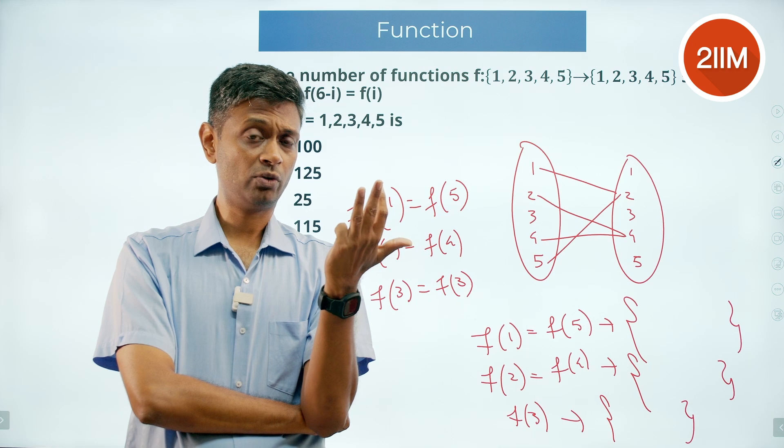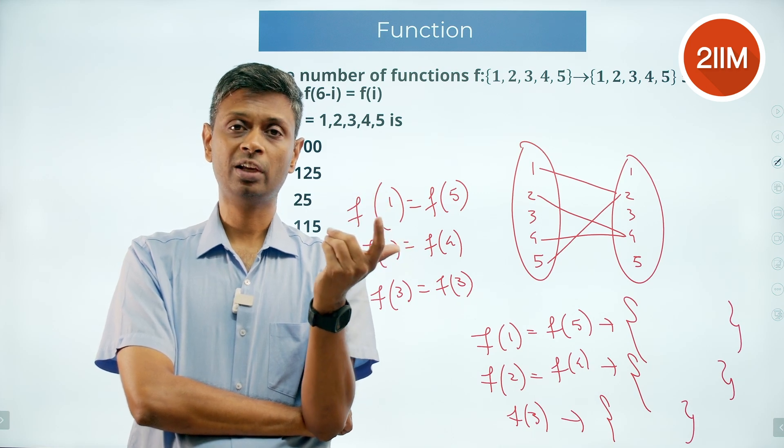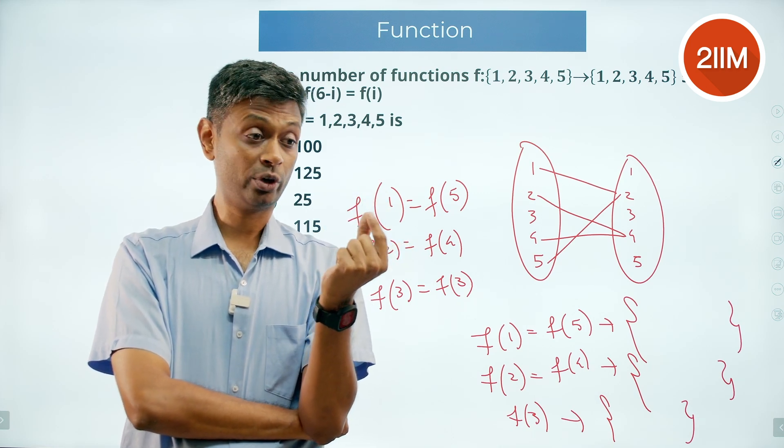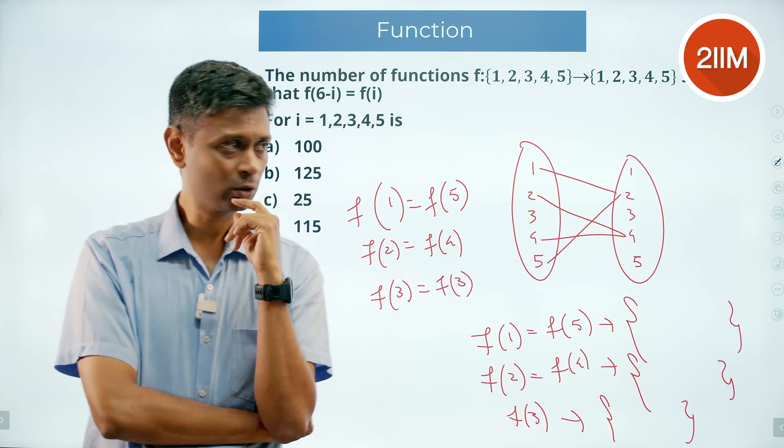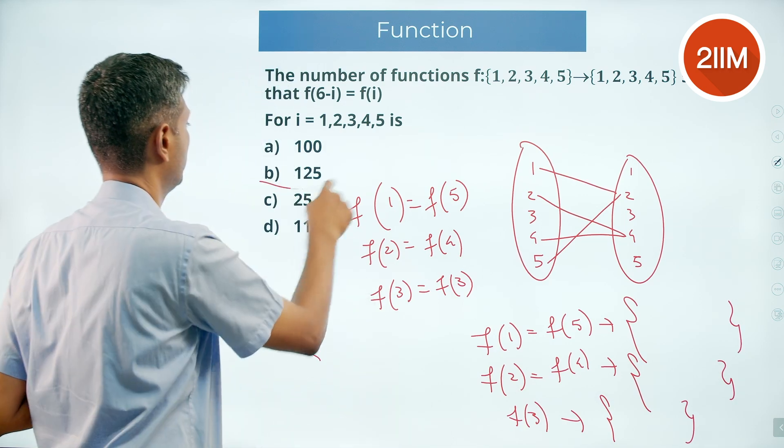f of 3, again I have 5 choices. 5 choices for f of 1, 5 for f of 2, 5 for f of 3. The moment I do it like this, f of 4 and f of 5 are automatically included. So 5 times 5 times 5: 125.